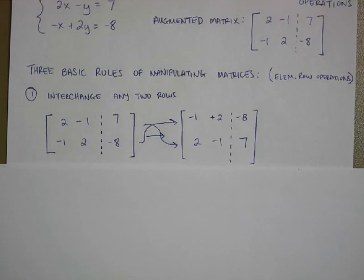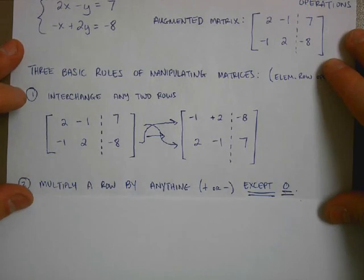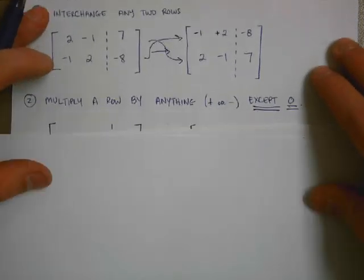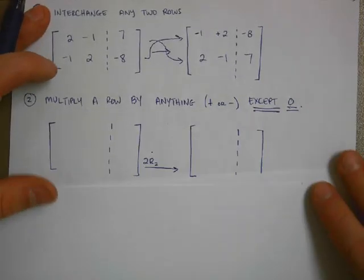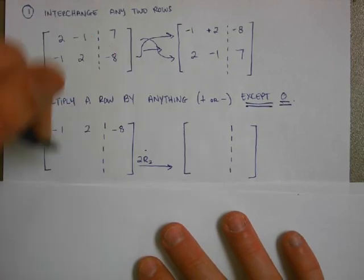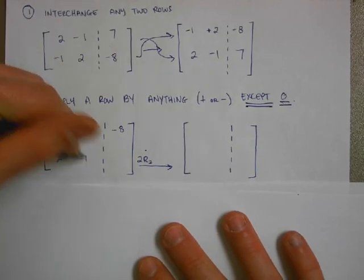The second rule goes like this. I can multiply any row in my matrix by anything, positive or negative, fractions, big numbers, small numbers. I can multiply by anything except 0. So I can take then my matrix, which now has become negative 1, 2, negative 8, 2, negative 1, 7.